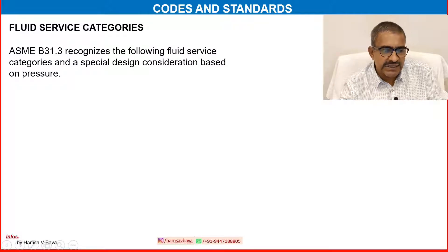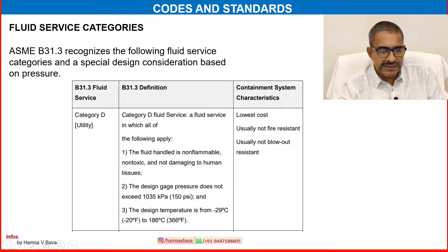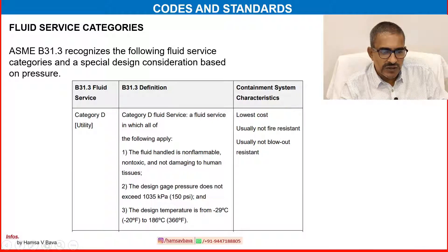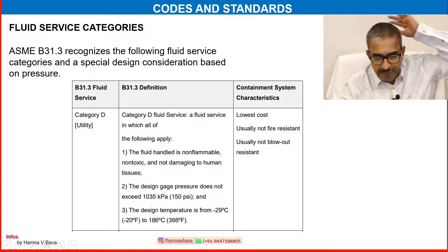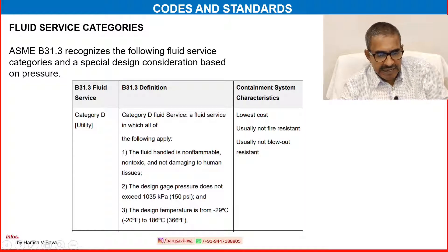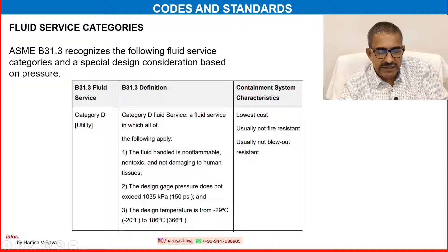ASME B31.3 recognizes the following fluid service categories with special design considerations based on pressure. Category D fluid service is one in which all of the following apply: the fluid handled is non-flammable, non-toxic and non-damaging to human tissues; the design gauge pressure does not exceed 150 psi; and the design temperature is from minus 29 to 196 degrees C. The containment system characteristics for Category D is lowest cost, usually not fire resistant and usually not blowout resistant.